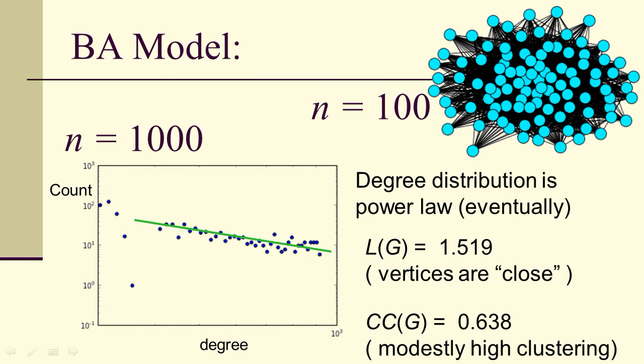This is known as preferential attachment. Here's an example of the BA model—a BA graph for N equals 100. For N equals 1000, notice that you see the degree distribution is power law, at least eventually. The vertices tend to be close together. We have the clustering coefficient 0.638, so it's modestly high clustering. You could, in some sense, say this is a scale-free small world network.